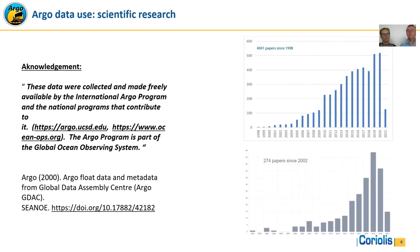Argo data follow an open and free data policy. In order to track the use of Argo data, it is important to acknowledge the use of Argo in your publication. Through monitoring of publications, we are able to show the value of Argo for scientific research. Since the start of Argo, nearly 4,700 papers have been published since the late 1990s. For BGC Argo, even in the pilot phase, already nearly 300 papers have been published, and we think we are on the same exponential curve of increasing publications experienced by core Argo over the past 20 years.